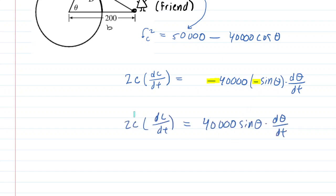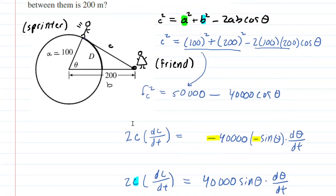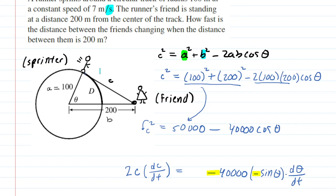Now let's think about some of the values we have to plug in. We can go and start with c. Now remember, c represents the distance between the sprinter and the friend. So it's this distance right here. And that distance is given because the question says, how fast is the distance changing when the distance between them is 200? So this means that at the moment of calculation, we're going to actually be plugging in 200 for c.